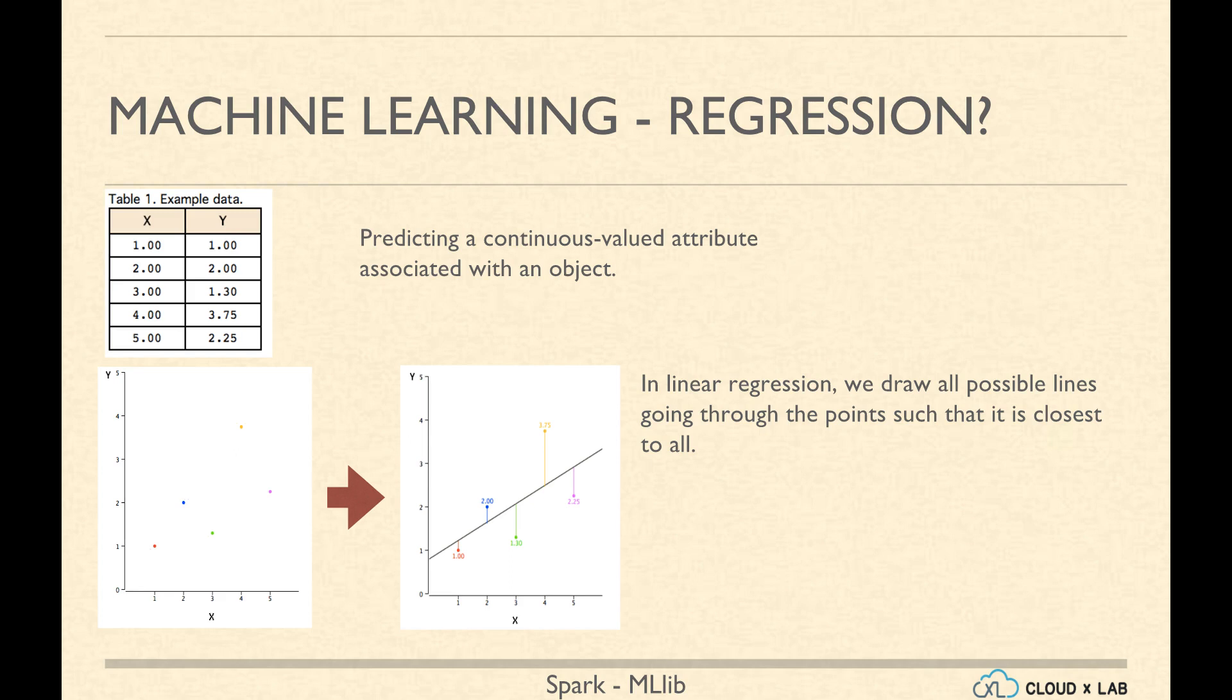After plotting it, if the data looks like it will fit a straight line, then we can use linear regression. In linear regression, we draw all possible lines while calculating the distance of each line from all of the points. The line having the least distance is considered as the model, and this line can be used for predicting the future.